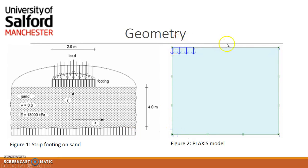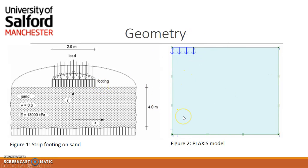Figure 2 shows our Plaxis model which has been simulated, and you can see the symmetry of this model. You can model the whole shape, but we are going to focus on the symmetry — modeling half of the model, which means half of 2 meters is going to be 1 meter. You can also model the whole footing with a settlement of 2 meters below, but we are going to focus on the symmetry since the model is symmetrical.